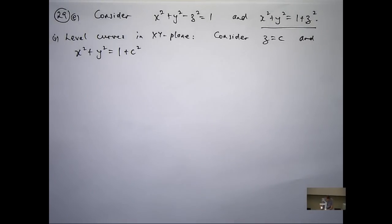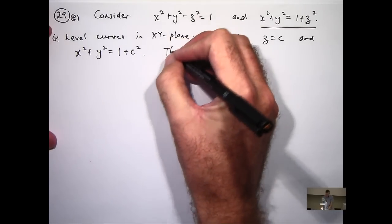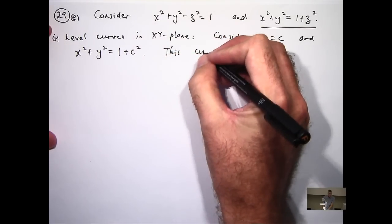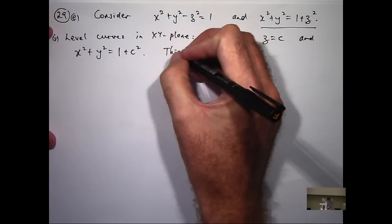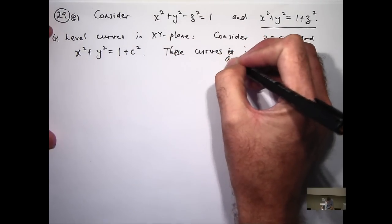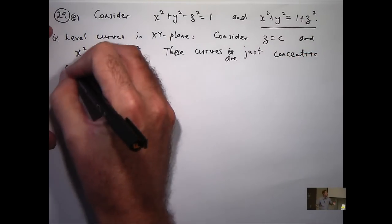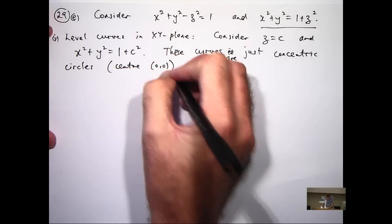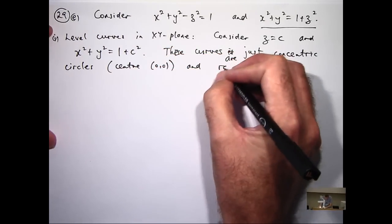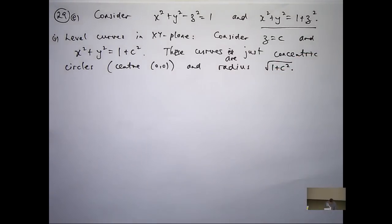So what I'm going to get is a whole bunch of circles that have the same centre, they're concentric, and they just have varying radii, depending on what C is.